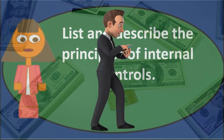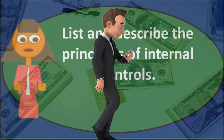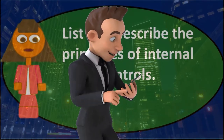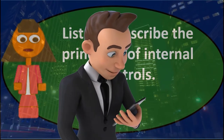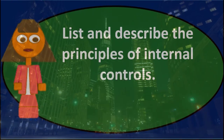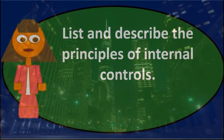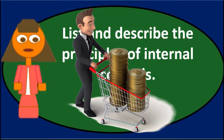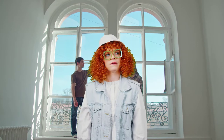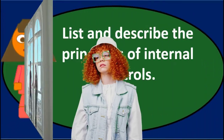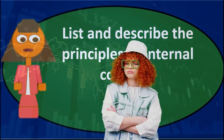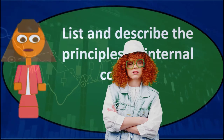Once we take a look at the internal control goals, we want to look at what are the principles that we can apply in order to achieve those ultimate objectives. Those are going to include things like establishing responsibility, maintaining adequate records, insuring the assets in case of loss, and separation of duties — which is one of the most common principles of internal controls.